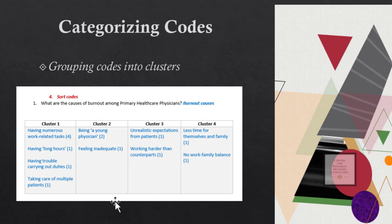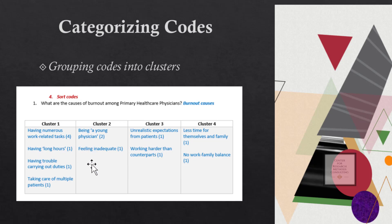If you are using software, you could do the sorting within the system, but the easier approach I've found is to download all the codes from the software and then manually sort them using the steps shown in this demonstration — create a table and put them into various clusters. When you finish and come up with themes, you can go back and enter those themes into the software.